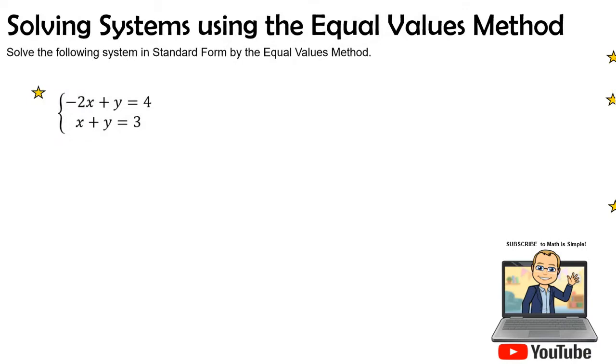Welcome back to part two of Solving Systems in Standard Form by the Equal Values Method. In the previous video, we had two examples of how to do that, and it could get a little hairy, but if we organize our work and make sure that we keep our equal signs in line with each other and keep each little part separate, you are going to do very well.